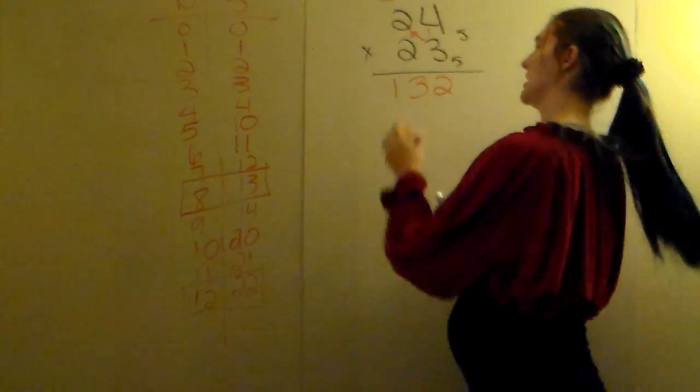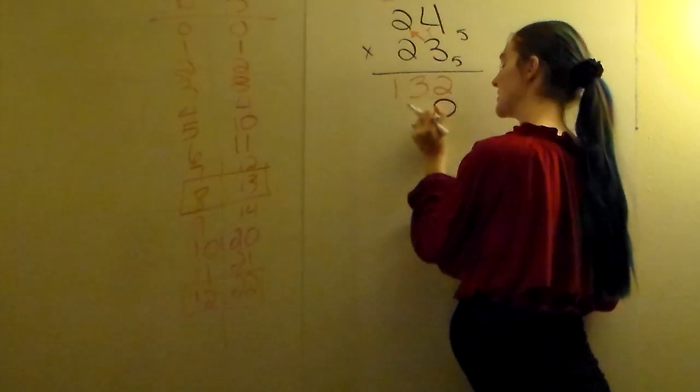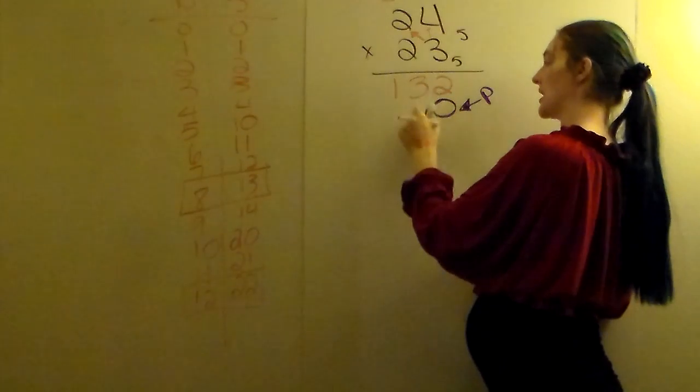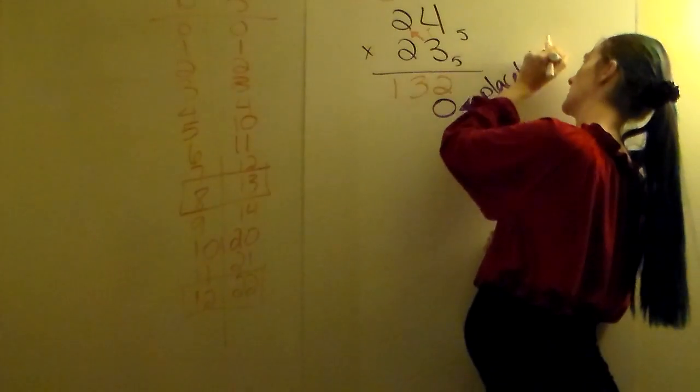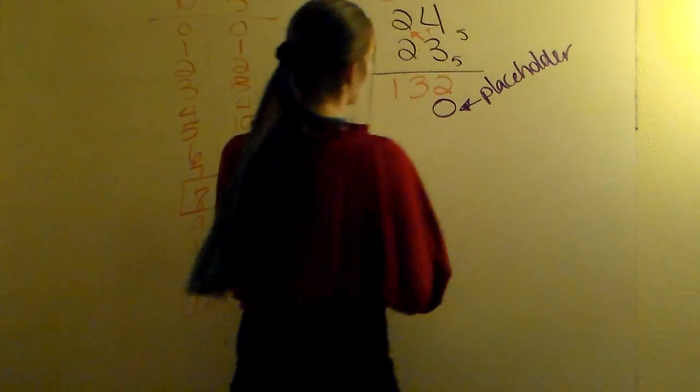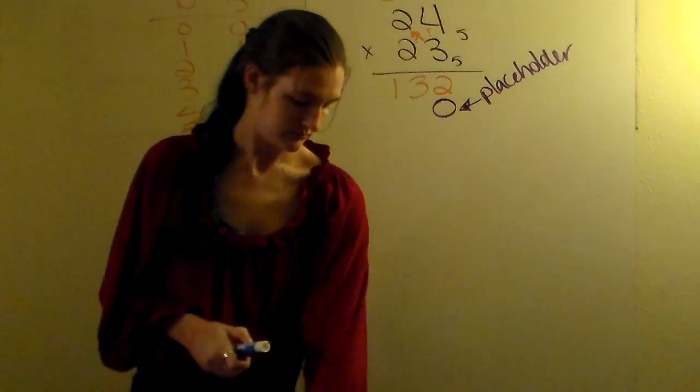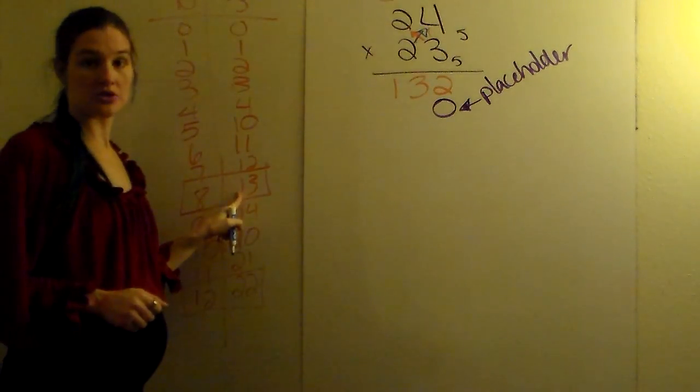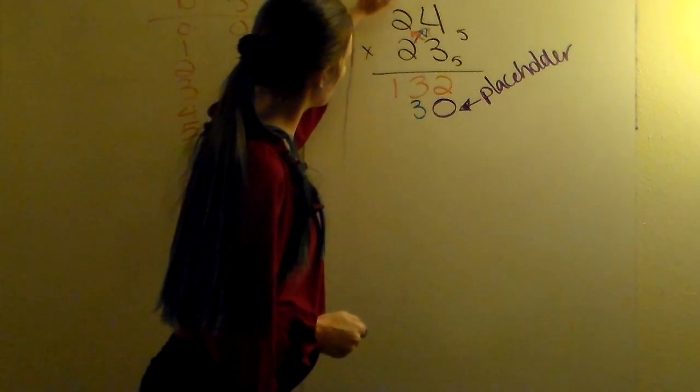Then what we're going to do, we've got to multiply this 2 to everything. So we're going to put a 0 placeholder. Again, that is just your placeholder so that the 2 and the first answer are lined up. If you don't put your placeholder, you will get it wrong. So we've got 2 times 4. It's going to be 8. We're not allowed an 8, so we're going to put the 13 instead. Put your 3, carry your 1.